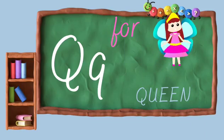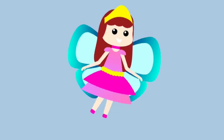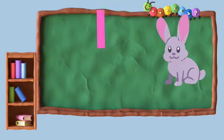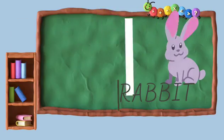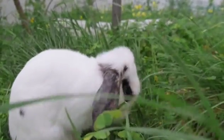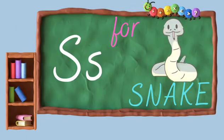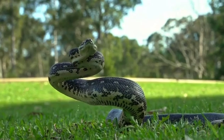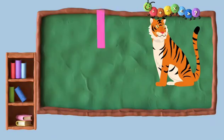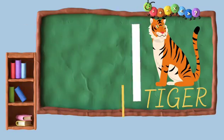Q for Queen. Queen. R for Rabbit. Rabbit. S for Snake. Snake. T for Tiger. Tiger.